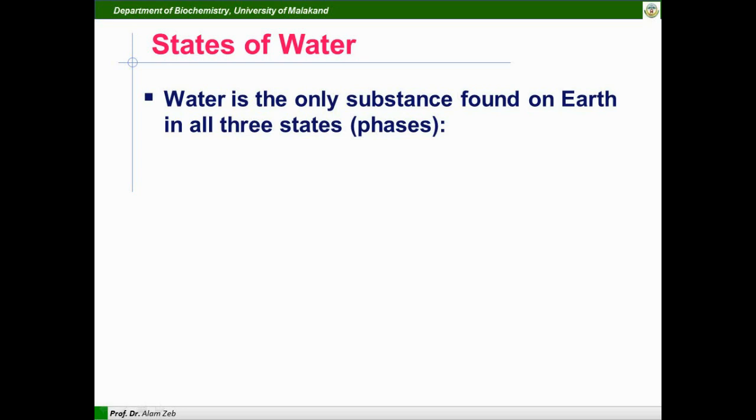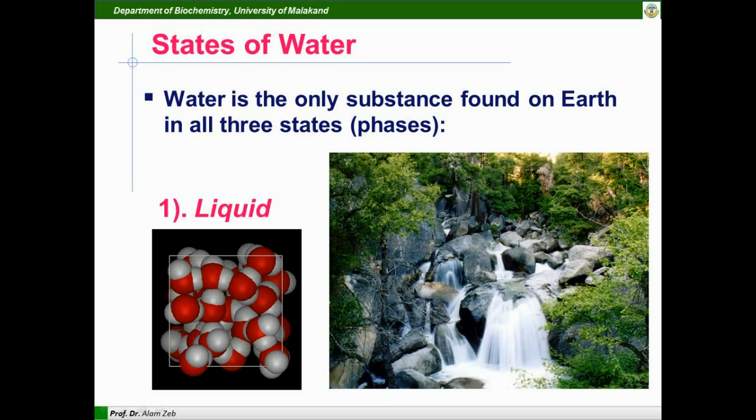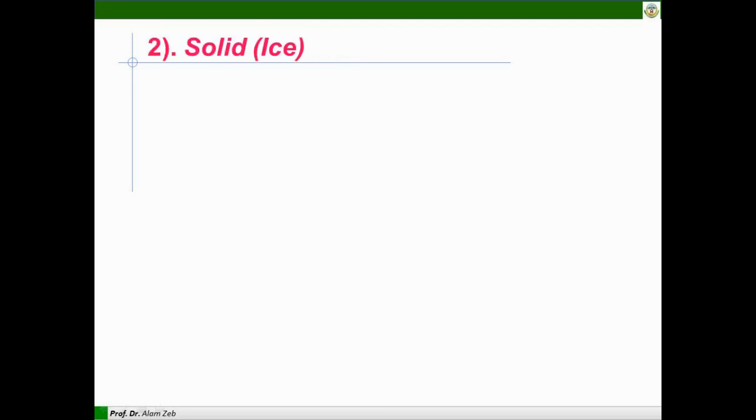Now the states of water. Water is the only substance found on Earth in all three states or phases. The first one is liquid. You can see here in this structure the water molecules are held close together but in a random way.